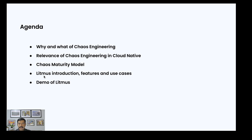Here is an agenda. We will first look at why and what Chaos Engineering is and its relevance to Cloud Native. I will also talk about how chaos generally matures in an organization that practices DevOps. Then I will delve into the introduction of Litmus, its features and use cases. At the end, Kothik will do a demo of how to get started with Litmus, showing an example of running chaos and connecting new targets to the Litmus-based control plane.